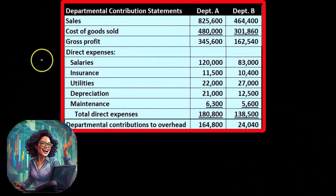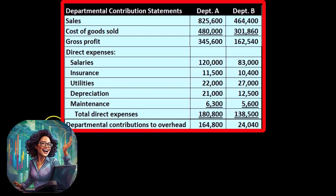Subtracting the total direct expenses from gross profit gives us the departmental contributions to overhead. This is an important number because many times this is what drives a value decision — whether or not a department is doing well. As long as this number is positive, the department is contributing to overhead.